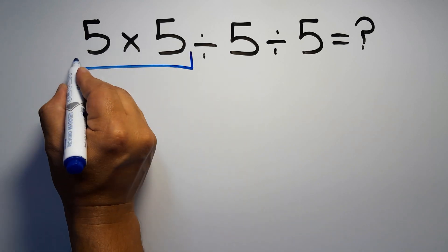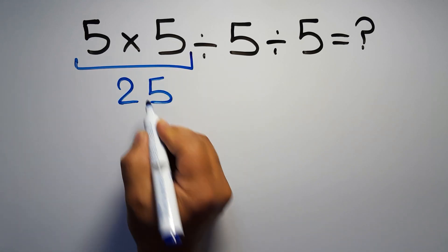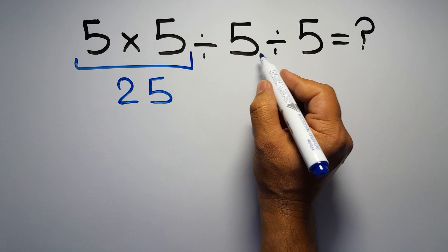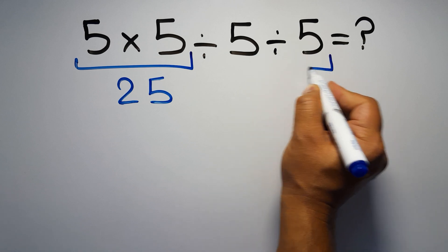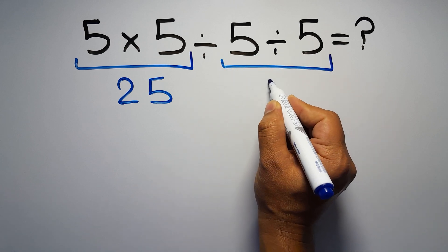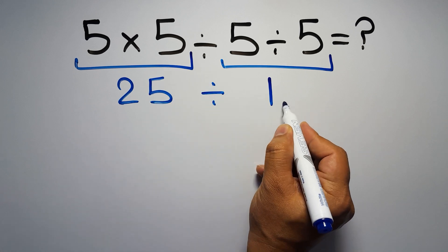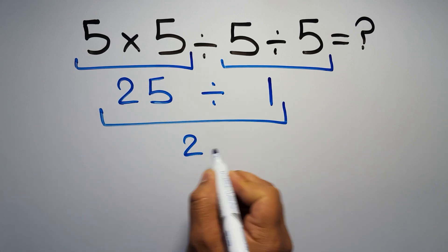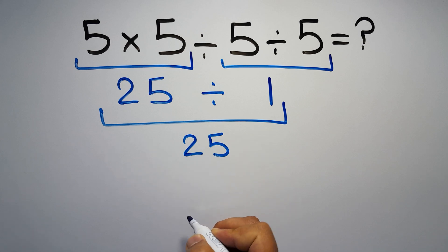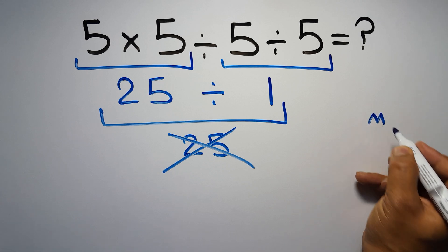5 times 5 gives us 25, and here we have 5 divided by 5 which equals 1. So 25 divided by 1 which equals 25. But this answer is not correct because according to the order of operations, multiplication and division have equal priority.